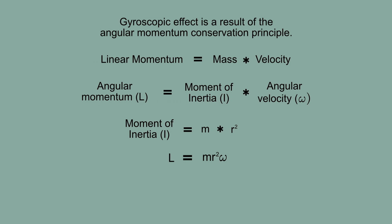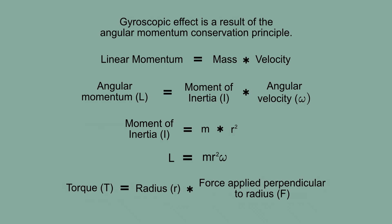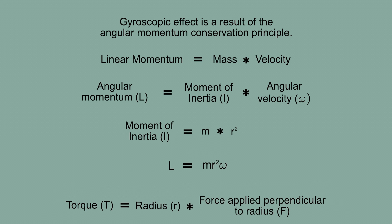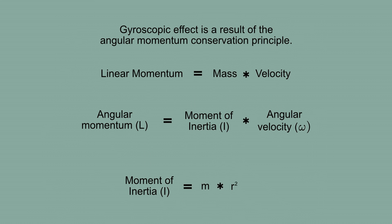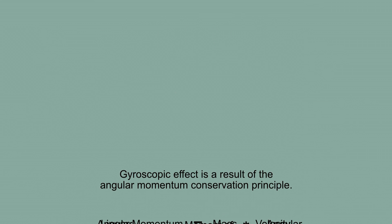Now there is another very important term we should discuss: torque. Torque is equal to r cross f, where r is the radius at which force is applied and f is the amount of force applied perpendicular to the radius. In the next part, we will discuss how to determine the direction of torque and angular momentum.